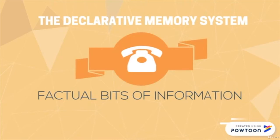We have our declarative memory. All the dates that we know, the words, events, concepts, ideas, and faces are factual information engraved in our declarative memory. There is a link between our declarative memory and our explicit memory because we are consciously trying to retrieve information. When is your mom's birthday? You are using your declarative memory to remember a date, and at the same time, you are using your explicit memory because you are doing this on an intentional, conscious level.